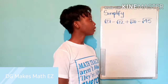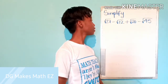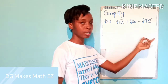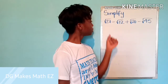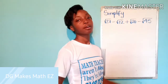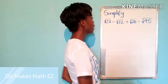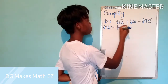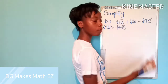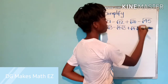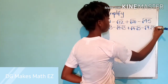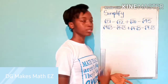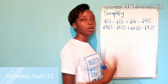For our third example, we are also going to create like surds. There is no number that is a common factor of 27, 12, 20, and 45 all together. So we look for pairs: a common factor of 27 and 12 is 3, so we express both as products of root 3. A common factor of 20 and 45 is 5, so we express both as products of root 5. Note that the two terms beside each other may not share a common factor, so rearranging the order of terms is fine.